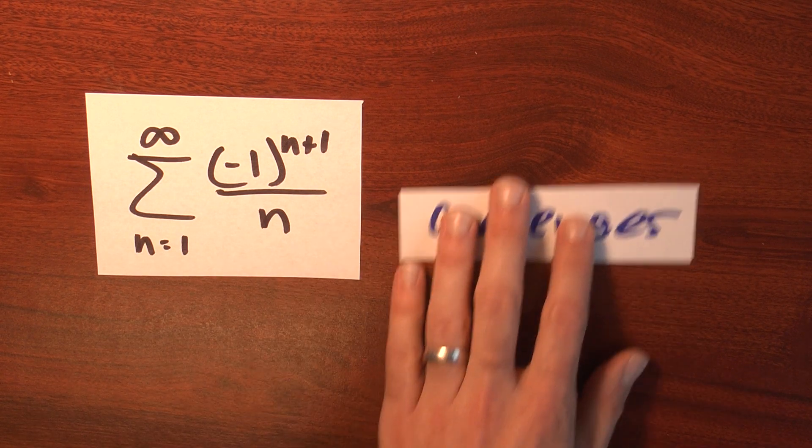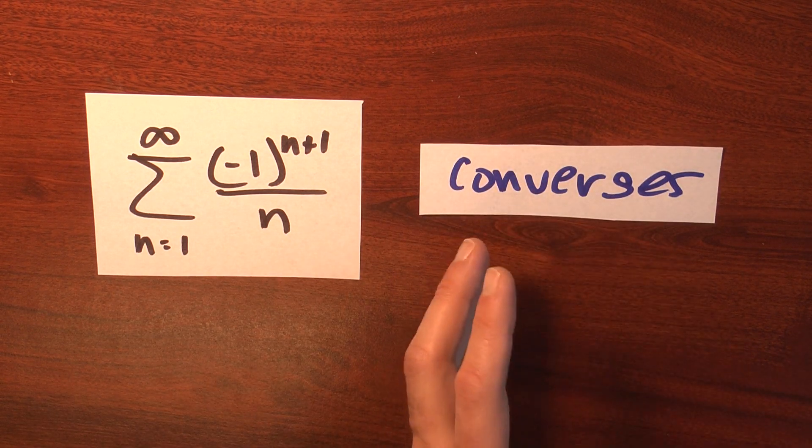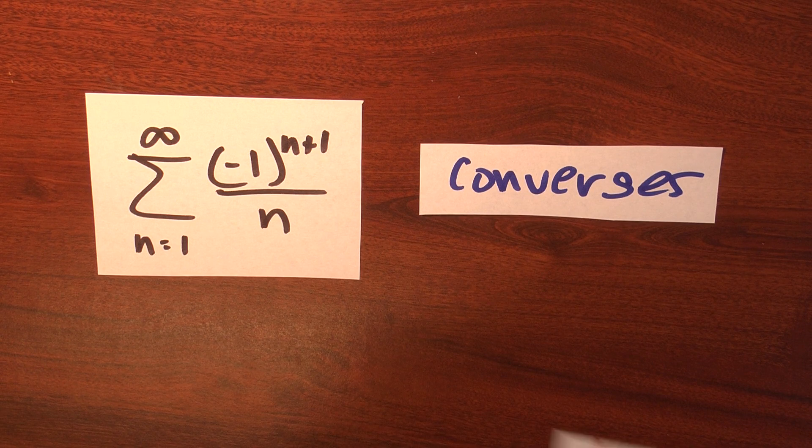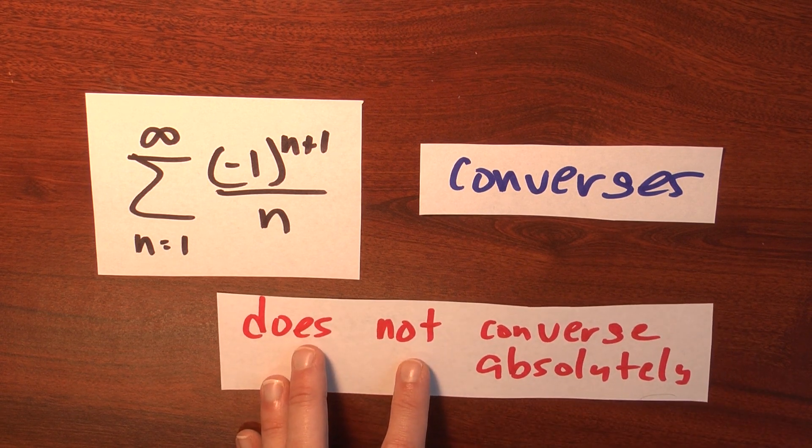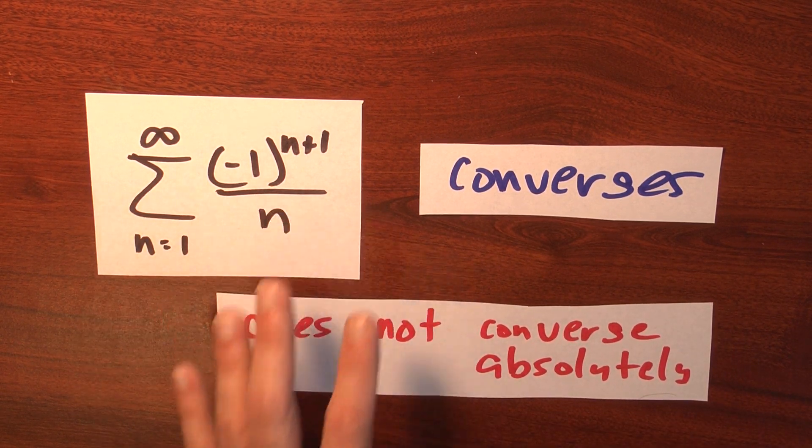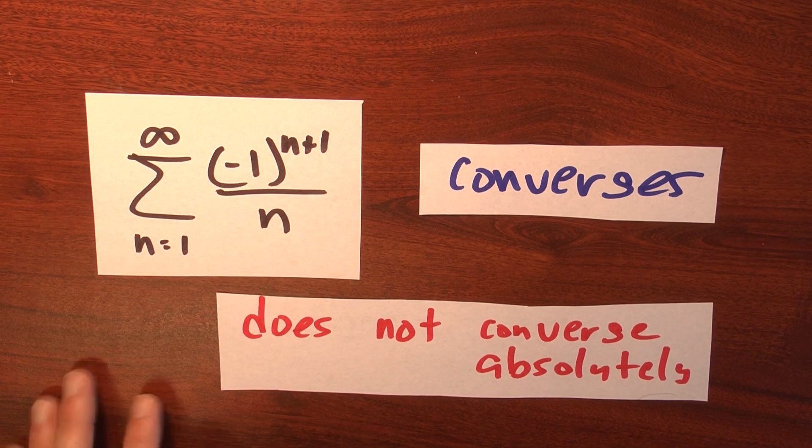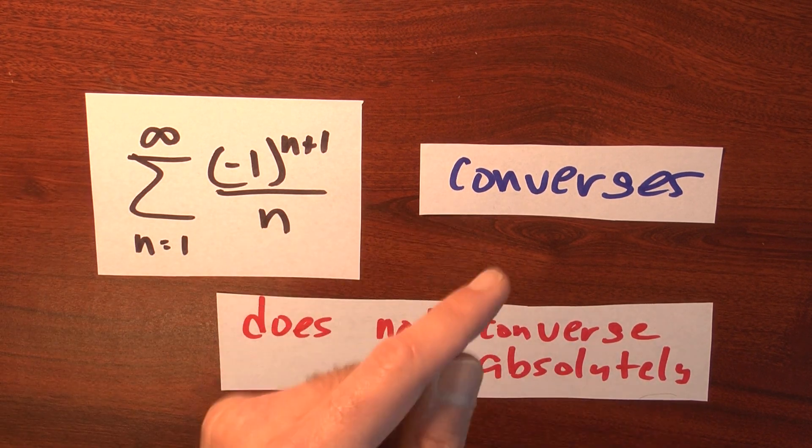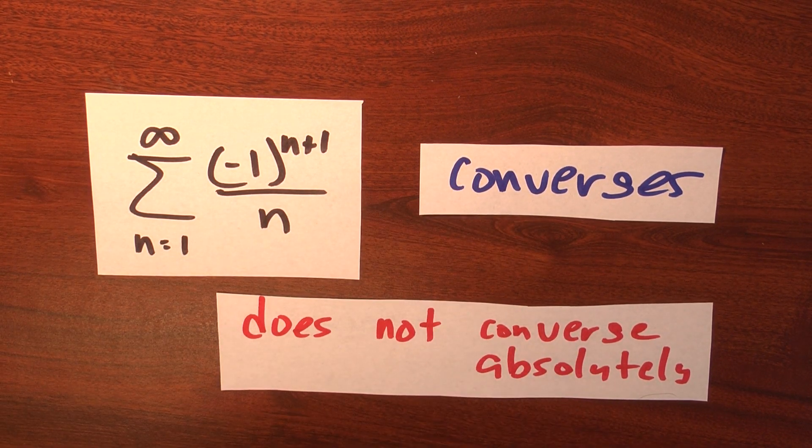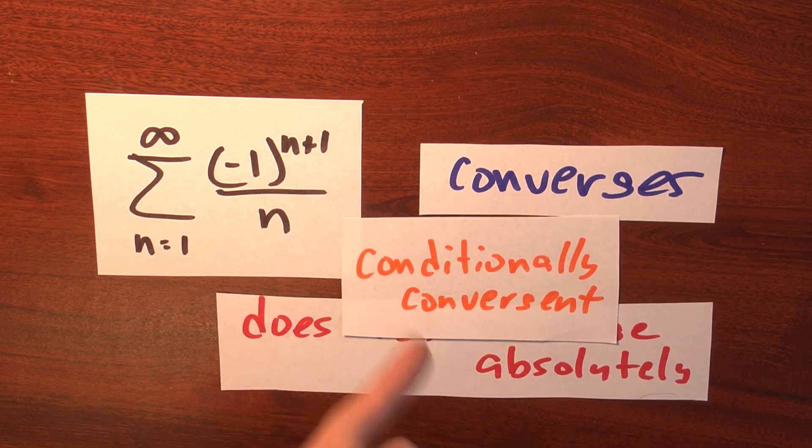And what we know about this is that it converges by the alternating series test. But it doesn't converge absolutely, because if you look at the sum of the absolute values, you're looking at the harmonic series, which diverges. And because it converges, but not absolutely, we call it conditionally convergent.